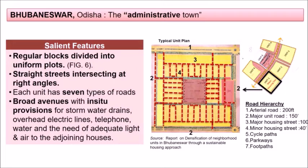The road hierarchy included: the major unit road at about 150 feet, the major housing street at about 100 feet, the minor housing street at 40 feet, cycle paths at level five, parkways at level six, and footpaths at level seven. This was the road hierarchy planned for the city of Bhubaneswar.